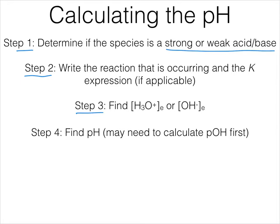Step three is find the equilibrium concentrations of the hydronium ion or of the hydroxyl ion. And then step four is to find the pH. Note we might have to calculate the pOH before we can do this.